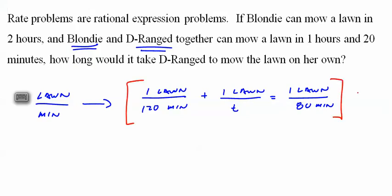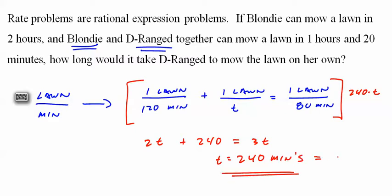Now that we've set it up, multiply by 240T. So we get 2T plus 240 equals 3T. T equals 240 minutes, also known as 4 hours.